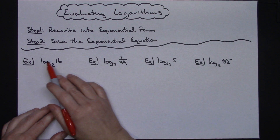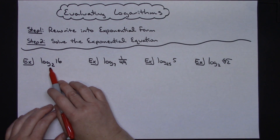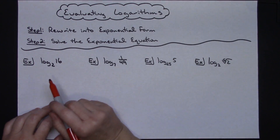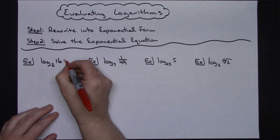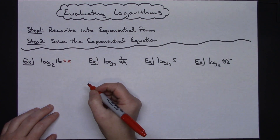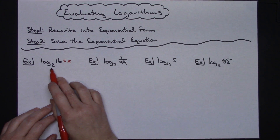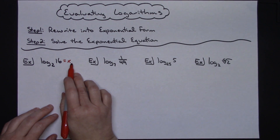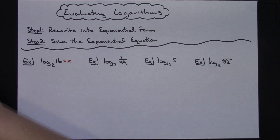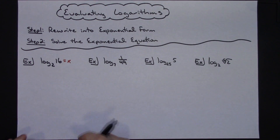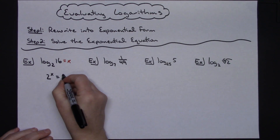In this first example we've got the log of 16 base 2. It might help to put a little "equals x" on there. That makes it easier to see that this is going to be 2 raised to the x equals 16, going back and forth between logarithmic and exponential form. So the first thing I'm going to do is write this as 2 raised to the x equals 16.